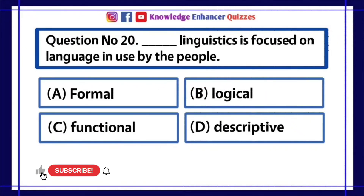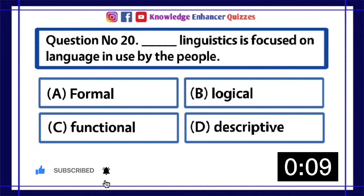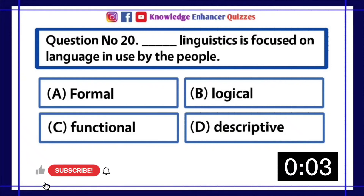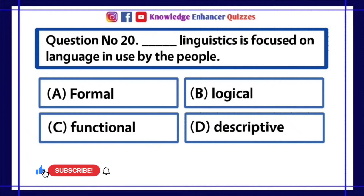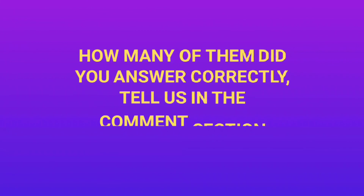Question Number 20: Dash linguistics is focused on language in use by the people. A. Formal, B. Logical, C. Functional, D. Descriptive. Option C is the right answer. How many of them did you answer correctly? Tell us in the comments section below.